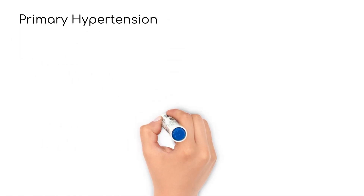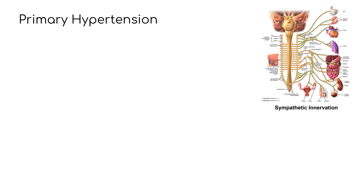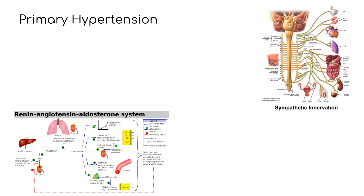A hypertensive crisis is a systolic pressure greater than 180 and/or a diastolic pressure greater than 120. Hypertension can be categorized as primary or secondary, with the majority of cases being primary. There is no direct cause for primary hypertension, but there are lifestyle, genetic, and environmental factors that contribute to it.